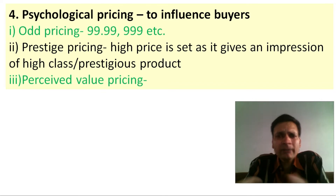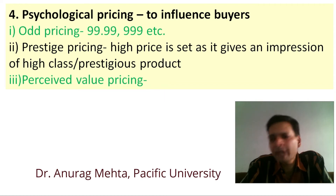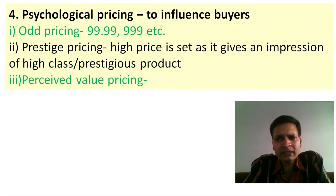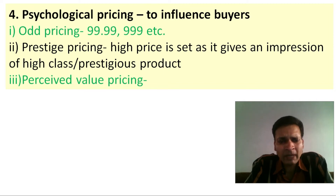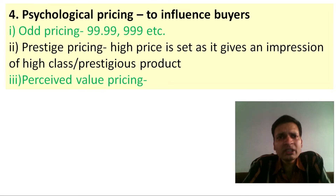Psychological pricing is also very effective in inducing buyers. The first method under psychological pricing is odd pricing, where the price is set slightly lower than a whole number. For example, instead of pricing a product at 100 rupees, it is priced at 99 rupees. This gives the buyer an impression that the price is quite low, falling in just a two-digit figure. Bata shoes famously follow this policy.